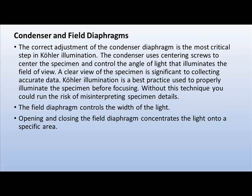In this topic we learn about KLR illumination. The correct adjustment of the condenser diaphragm is the most critical step in KLR illumination. The condenser uses centering screws to center the specimen and control the angle of light that illuminates the field of view. A clear view of the specimen is significant to collecting accurate data. KLR illumination is a best practice used to properly illuminate the specimen before focusing. Without this technique, you could risk misinterpreting specimen details. The field diaphragm controls the width of the light; opening and closing it controls the concentration of light onto a specific area.